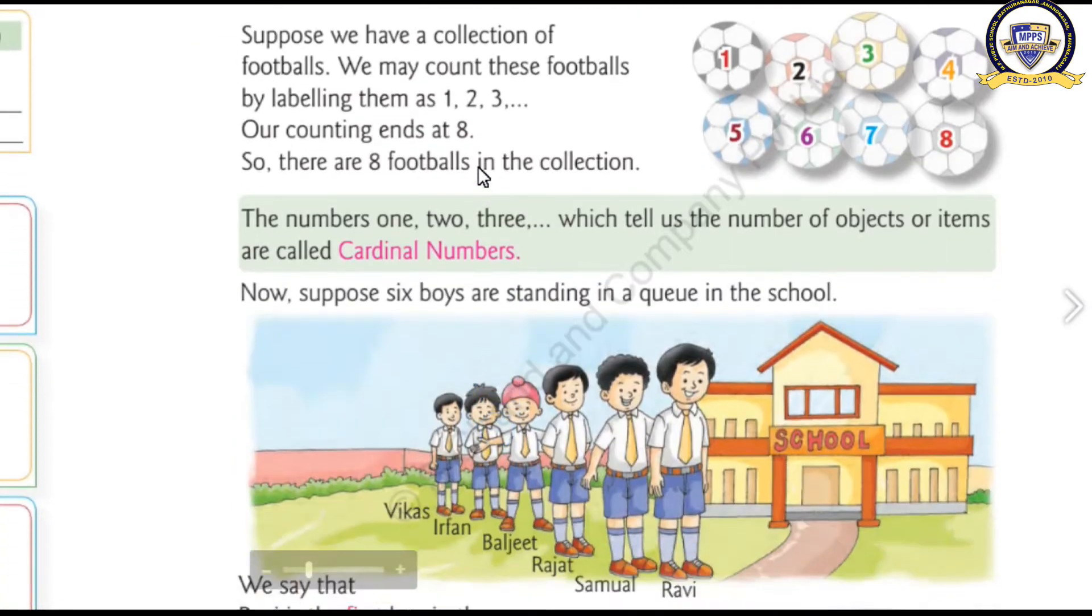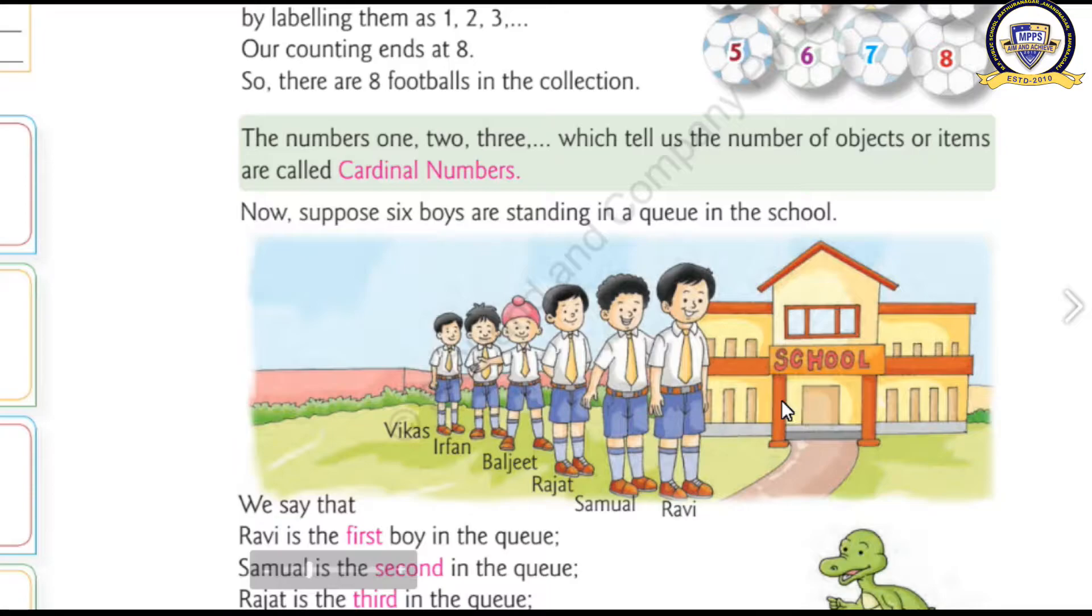See, one school's picture is here in front of the school. A lot, many students are standing. One, two, three, four, five, six. Six students are standing in front of you. That six is a Cardinal Number.